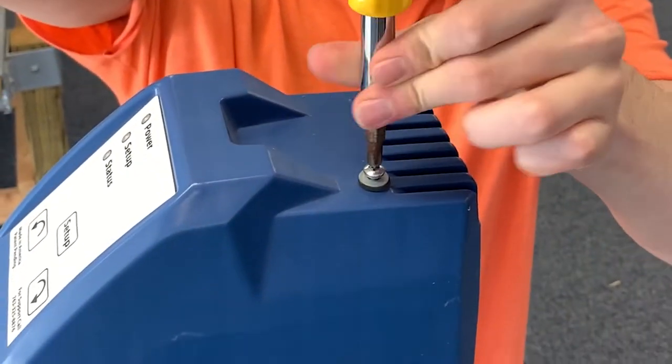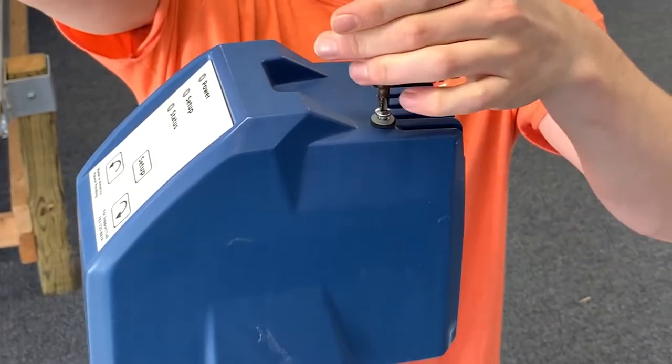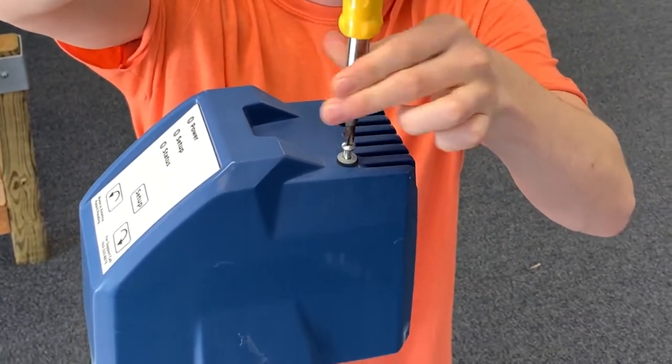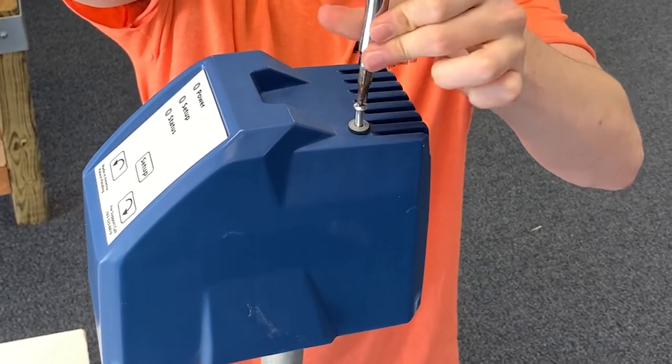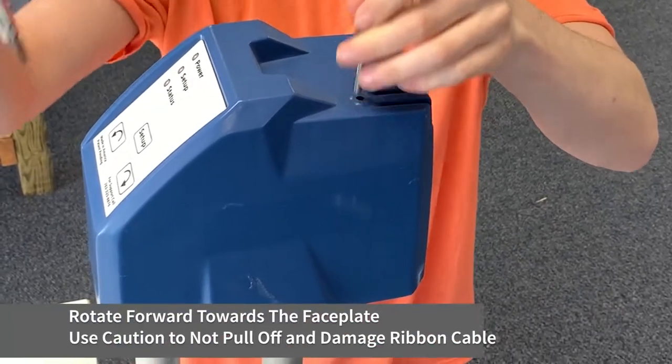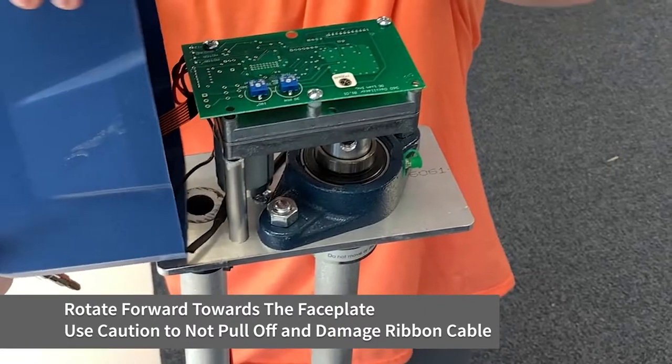Begin by removing the screw located on the top of the blue oscillator cover using a number two Phillips screwdriver. Lift the cover and rotate forward towards the faceplate.